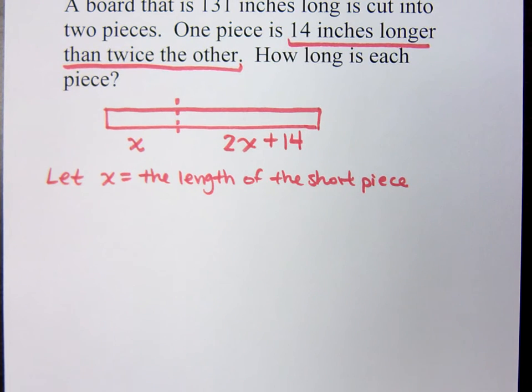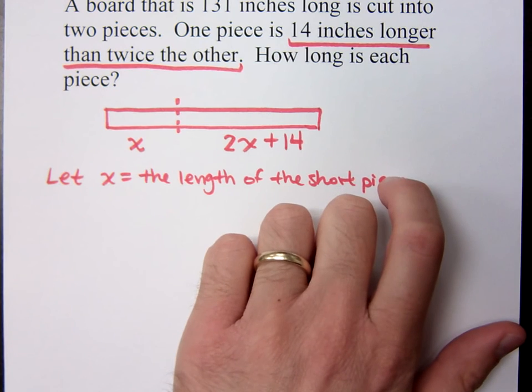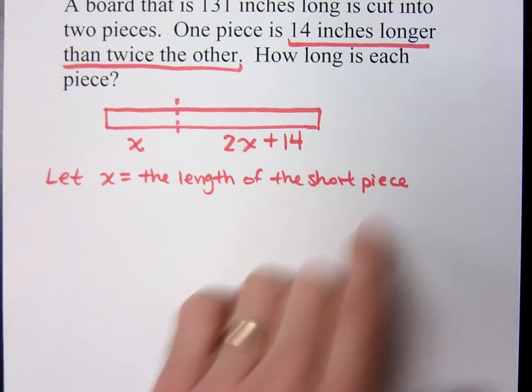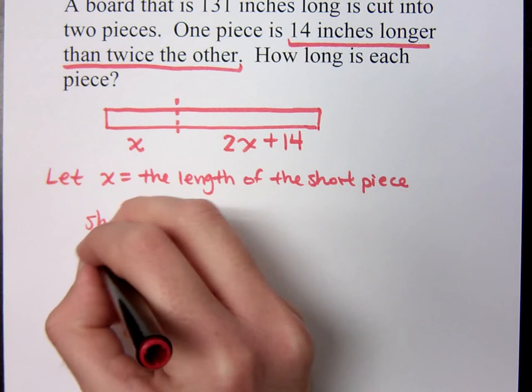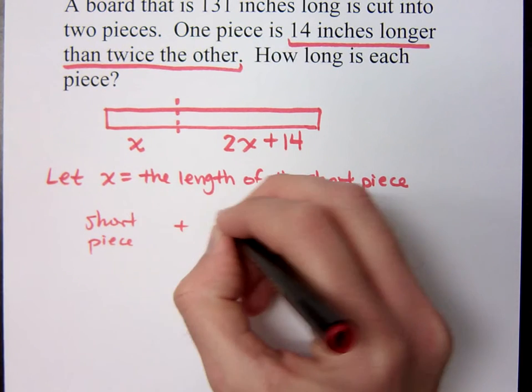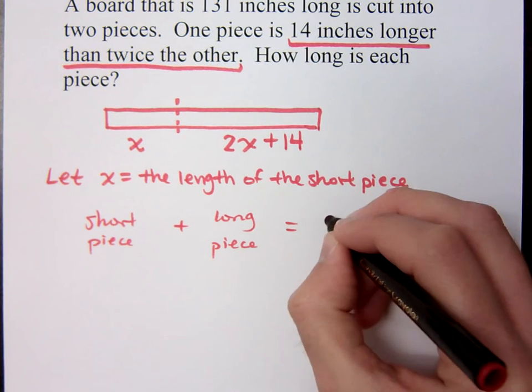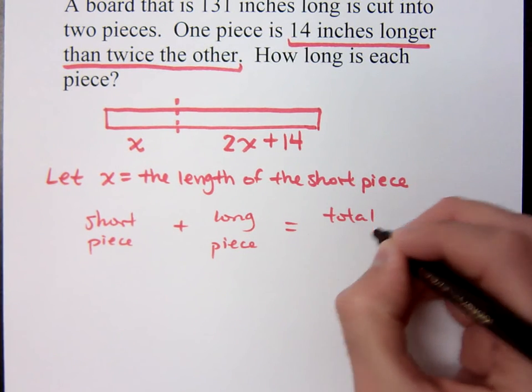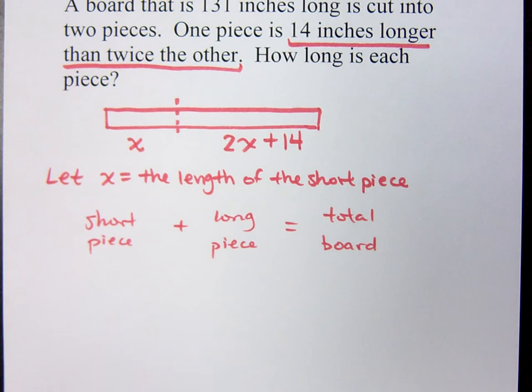Right, and what you see in this problem, what you're going to see in a lot of problems, is that you have a bunch of different pieces, but you know their whole amount or their total, right? So you can say, basically, you've got the short piece and the long piece together is equal to the total board, right? We're going to neglect that eighth or a quarter inch of the cut, right? That's it. It's negligible.